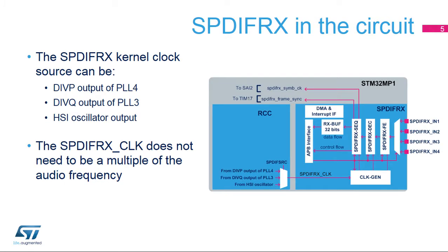The RCC or reset and clock control block of the STM32MP1 device provides both the APB clock and the SPDIF-RX CLK kernel clock to the SPDIF-RX. For better flexibility, the SPDIF-RX CLK can be selected from three different sources: the DIVP output of PLL-4, the DIVQ output of PLL-3, or the HSI oscillator output.